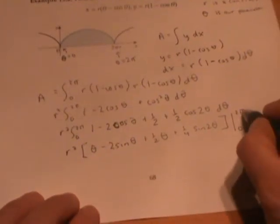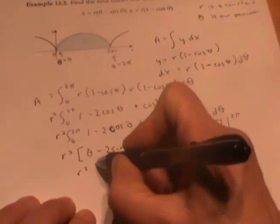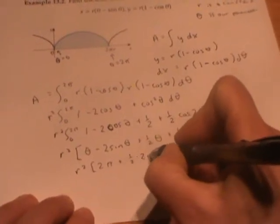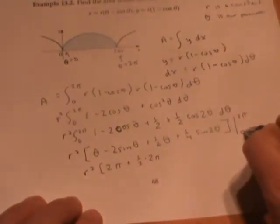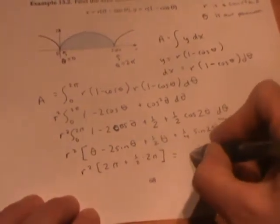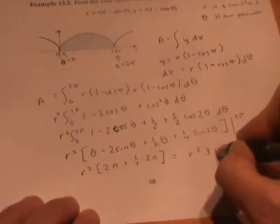When we plug in two pi, both sine terms drop out. And we just get r squared times two pi plus one half times two pi. And when we plug in zero, all four terms drop out. So our final answer is r squared times three pi.